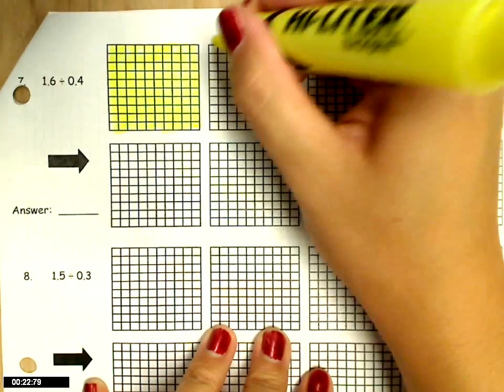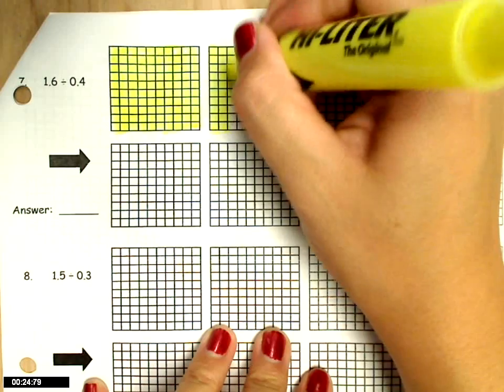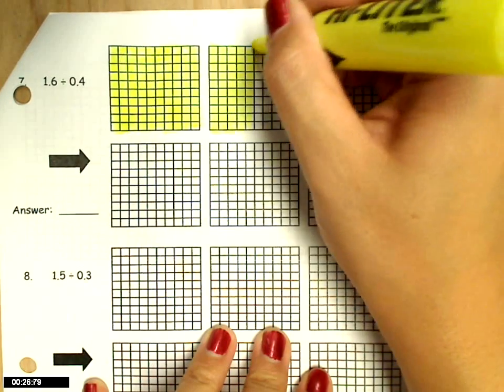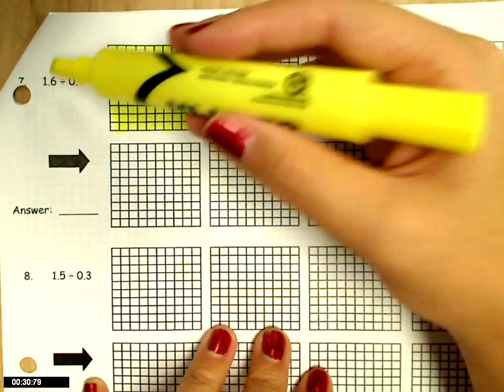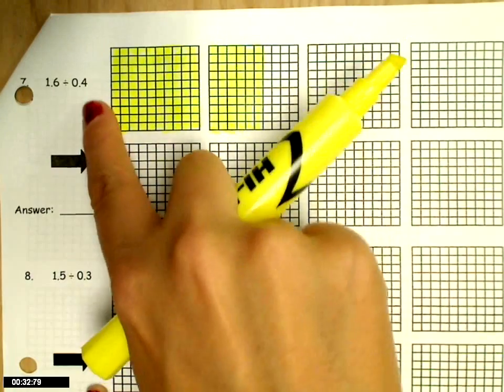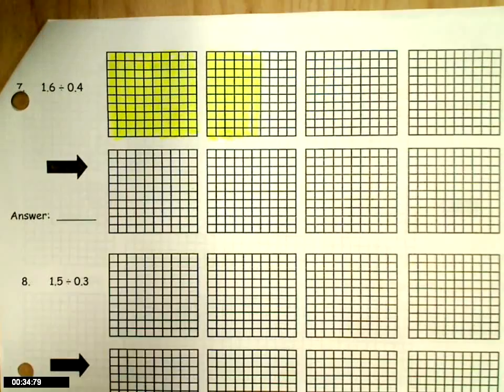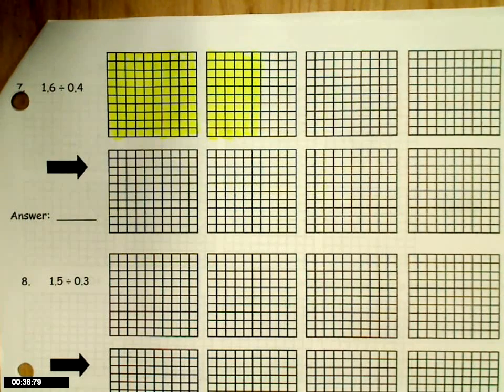It doesn't have to be that neat. Okay, so 1 and 6 tenths are shaded, and then because this number is a decimal smaller than 1, it's going to tell me how many are in each group.